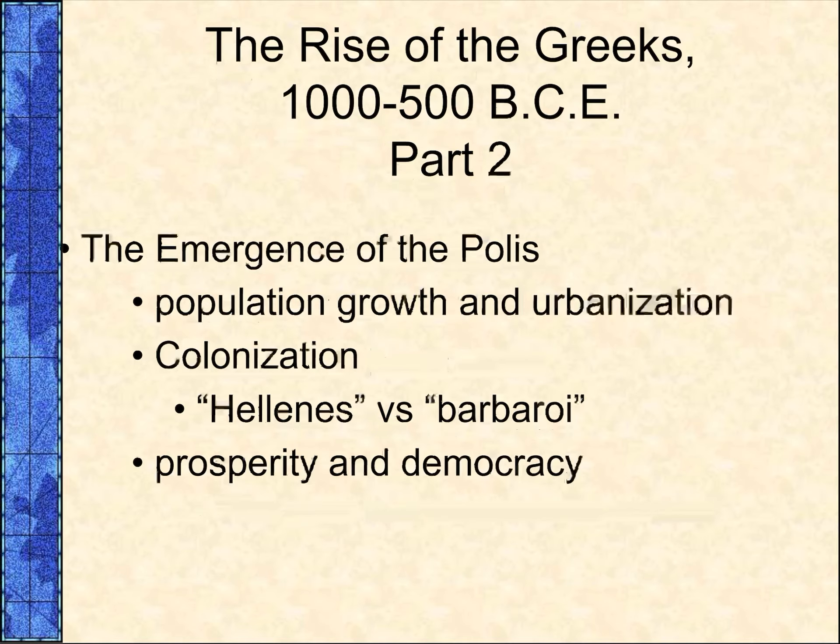When population growth outstripped available resources, the Greeks sent excess population to colonize other areas in the Mediterranean and Black Sea. Colonization brought the Greeks into closer contact with other peoples, introduced them to new ideas, but also sharpened their sense of Greek identity. One of the most significant new developments was the invention of coins in Lydia in the early 6th century BCE. Increasing prosperity and the growth of the middle class led to the emergence of one-man rule by tyrants, who reduced the power of traditional elites. The tyrants were eventually ejected, and government developed in one of two directions: an oligarchy — an elite, land-owning, rich class controlling government — or a democracy, meaning everybody got a say.